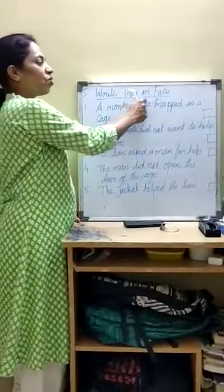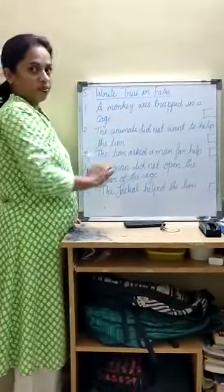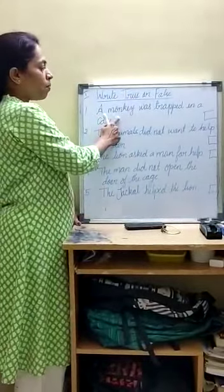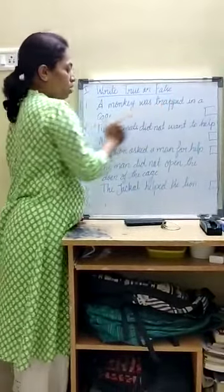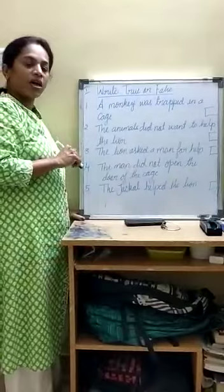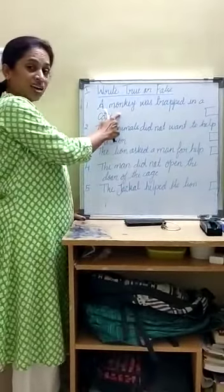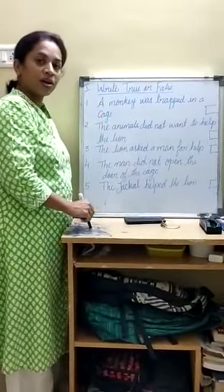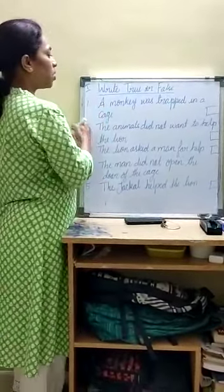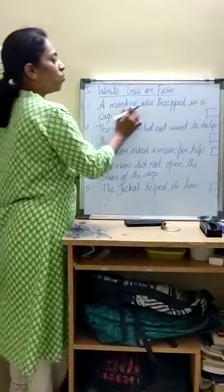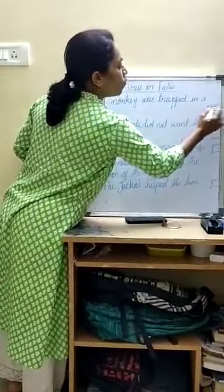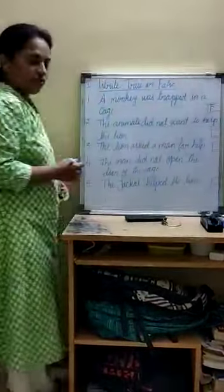First question is true or false. 'A monkey was trapped in a cage.' Who was trapped in a cage? A monkey? No — a lion. So this is false. Write F for false.